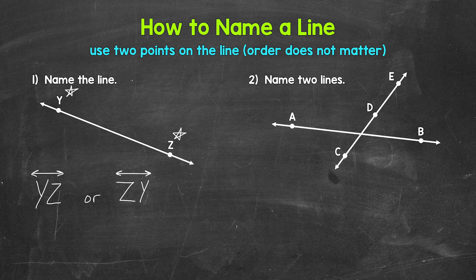Let's move on to number two, where we need to name two lines. Let's start with this line right here, where we have point A and point B. We can name this line, line AB.